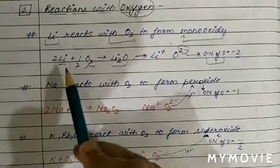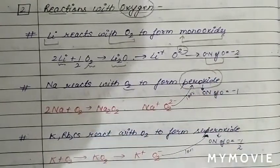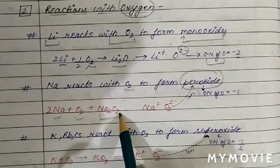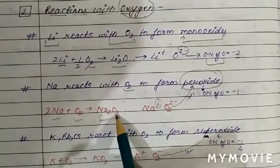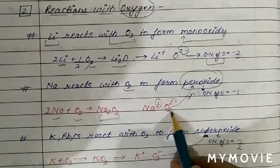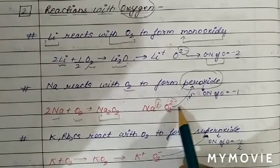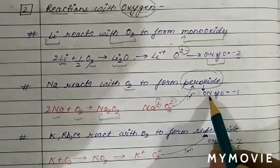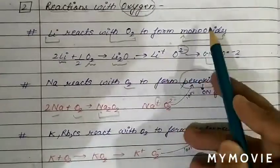When sodium reacts with oxygen, it forms a peroxide — sodium peroxide (Na₂O₂). Sodium (alkali metal) has a charge of +1, while for two oxygen atoms there is a −2 charge overall, giving each oxygen atom a charge of −1. Therefore, in peroxide the oxidation state of oxygen is −1.